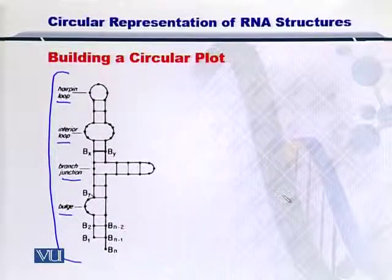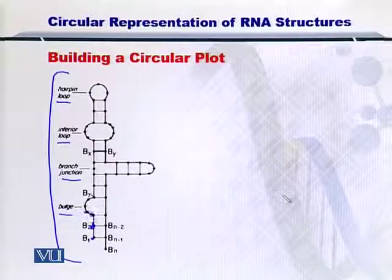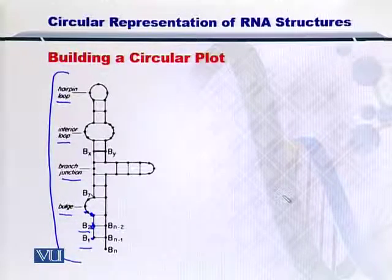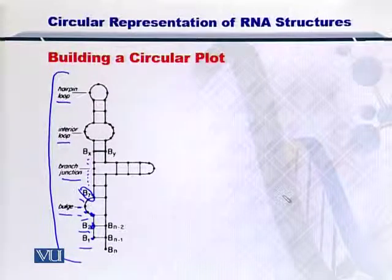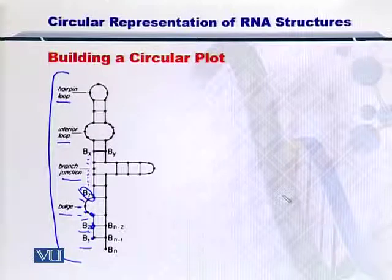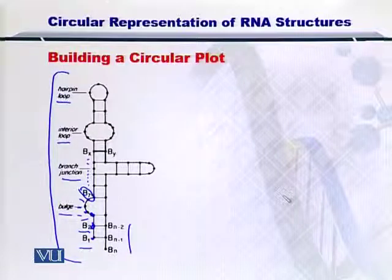The straightforward way is to simply label each nucleotide with an index as shown here by B1, B2, B3, B4, B5, B6, and B7 and so on and so forth. Once you label all of these nucleotides starting from the first one till the last one, which in this case is represented by BN...